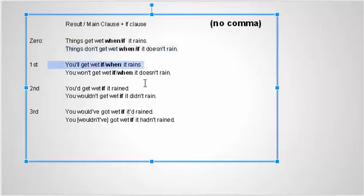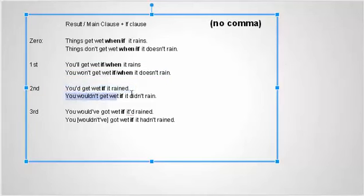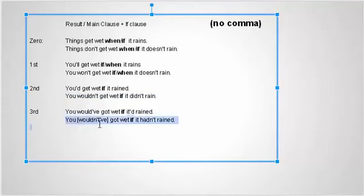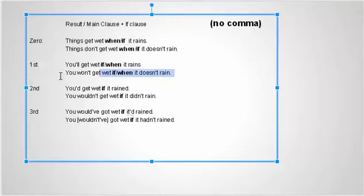Here are examples across all conditionals: 'You'll get wet if it rains.' 'You won't get wet if it doesn't rain.' 'You'd get wet if it rained.' 'You wouldn't get wet if it didn't rain.' 'You wouldn't have got wet if it had rained.' 'You wouldn't have got wet if it hadn't rained.' There's no comma here. We can also say 'You won't get wet when it doesn't rain' and 'You'll get wet when it rains.'